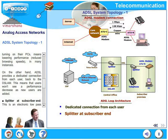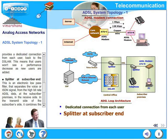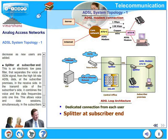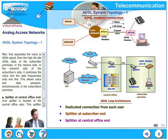The splitter at the subscriber end is an electronic low-pass filter. The splitter at the central office end works similarly. These are some of the network components that form an ADSL network.